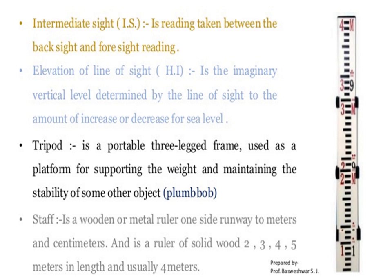Then the tripod is a portable three-legged frame used as a platform for supporting the weight and maintaining the stability of some other object. Next is the staff, which is a wooden or metal ruler graduated in meters and centimeters. It is a ruler of solid wood of 2 meter, 3 meter, 4 meter, and 5 meter in length — usually 4 meters in length.